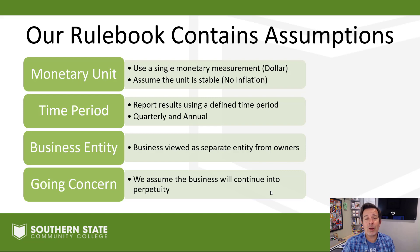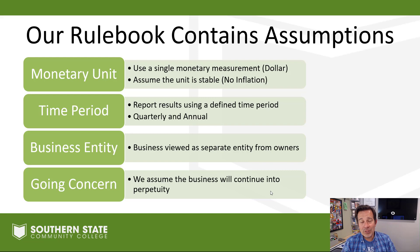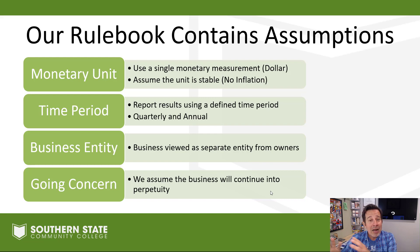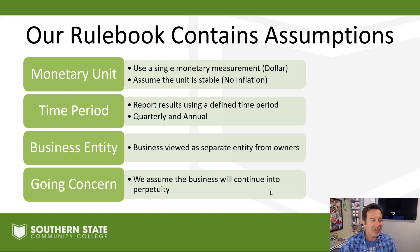There's a time period assumption — our accounting reports are created assuming a certain time period. In publicly traded companies, the time periods are quarterly and annually. Apple will release a quarterly financial report four times a year, and then an annual report that covers the entire year. There's also a business entity assumption, where we view the business as its own separate thing apart from its owners. Apple is its own thing — if I own shares of Apple, my personal finances are separate from Apple itself. Apple doesn't count my checking account in their billions of dollars in cash, and unfortunately I can't count Apple's billions in my own records either.